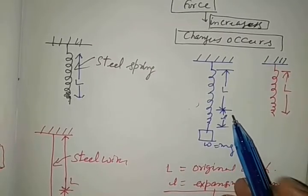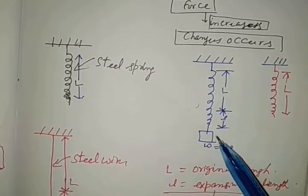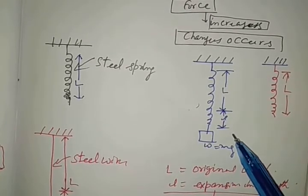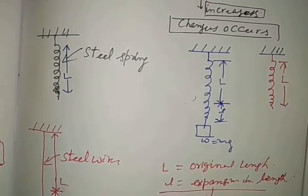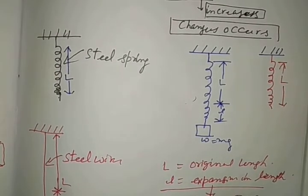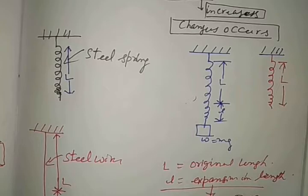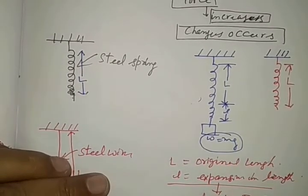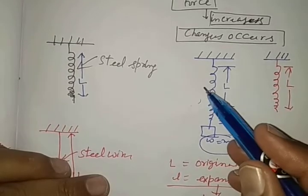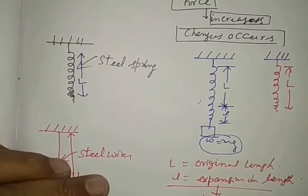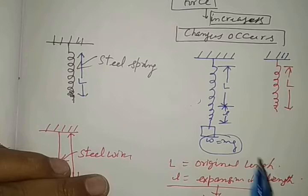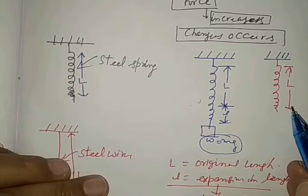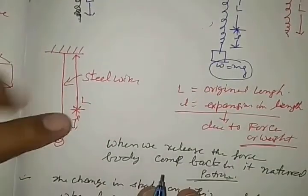See here in this experiment, when weight is suspended, elongation in the spring occurs, and when it is compressed, decrease in the length. This is deforming force or weight. Deformation means change in shape and size of a body. And when we release the force, again it regains its normal shape in both the cases.